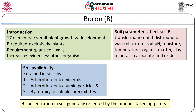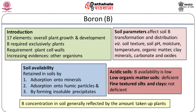soil pH, moisture, temperature, organic matter, clay minerals, carbonate and oxide content may affect soil boron transformation and distribution in different fractions. In acidic soils, boron availability is low. Soil low in organic matter is deficient in boron compared to soil with high organic matter. Boron is not readily held by soil particles and tends to leach out easily beyond the root zones of many plants. Hence, fine textured silts and clays are not deficient in boron as compared to sandy soils.